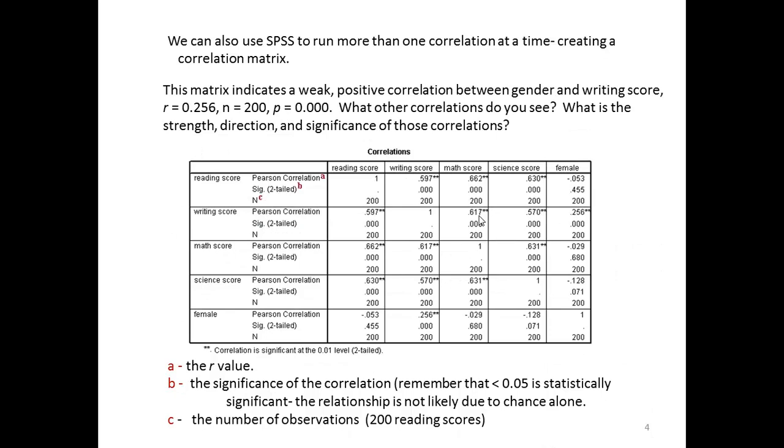This matrix indicates a weak positive correlation between gender, in this case female, and writing score. Very weak, but significant.